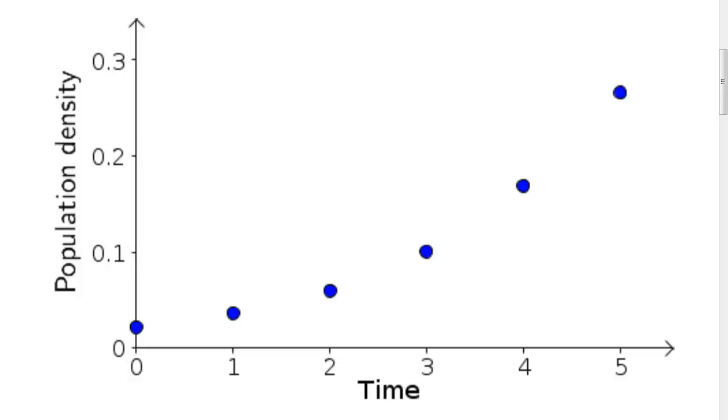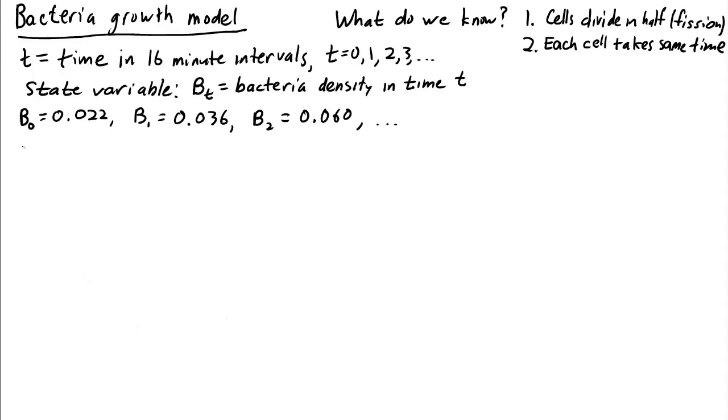Dynamics is all about change. So let's focus on how the bacteria population changes over time. What is an expression for the change in a time step? It's just b sub t plus 1 minus b sub t. That's the change from time step t to t plus 1.